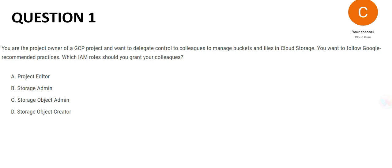The first option is project editor. We can clearly see the question says: delegate control to colleagues to manage buckets and files in Cloud Storage. So we need minimal access for security. With project editor, it's giving access to the entire project — the person will be able to go to the rooms, kitchens, bathrooms, everything. That's not minimal access, and it's not needed for the work. In GCP, project editor means the person can edit everything in the project. We only want them to manage buckets and files in Cloud Storage. That is why A is not the answer.